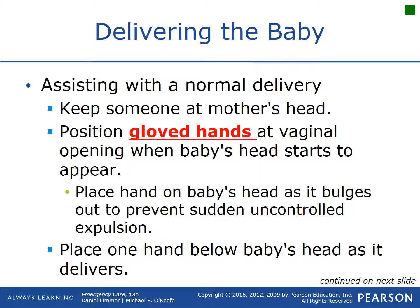For a normal delivery, keep somebody at the mother's head — call for additional resources if needed, deliver at the house or in a parked ambulance. The person at the mother's head provides oxygen, makes eye contact, and keeps her calm. The other person with gloved hands is in the strike zone ready to receive the baby. As the baby starts to come out, place one hand on it as it bulges through to prevent any sudden uncontrolled expulsion — you don't want the baby coming out too fast.